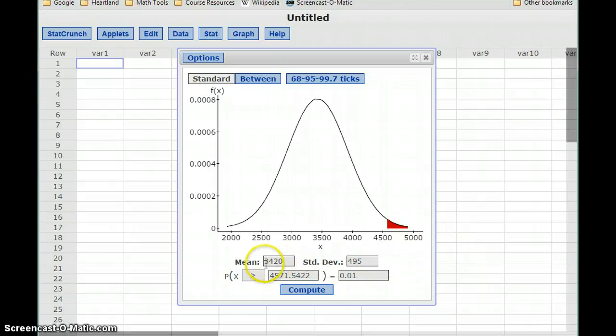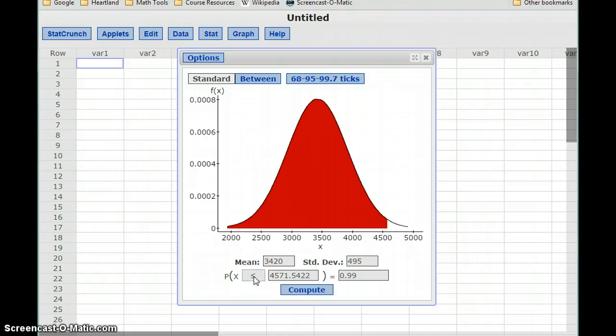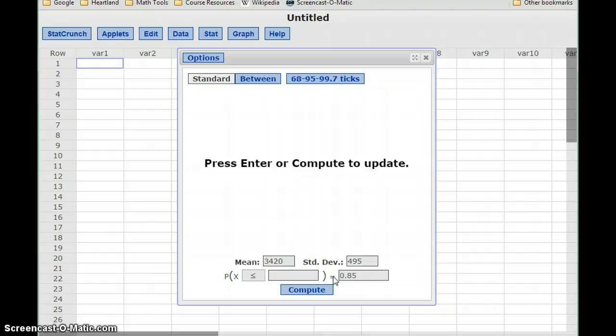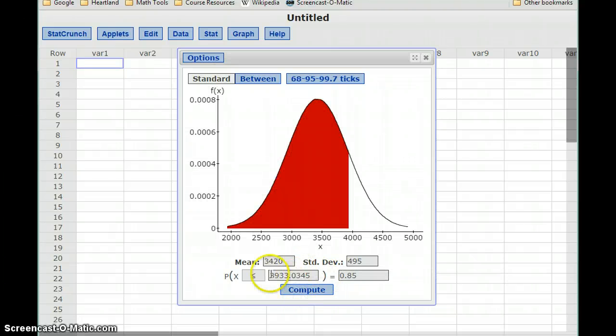Going back to StatCrunch, we're using the same mean, same standard deviation, but we want the probability that x is less than some value to be 0.85. So what value is at the 85th percentile? And in this case, it's just a little over 3,933, or about 3,933 grams.